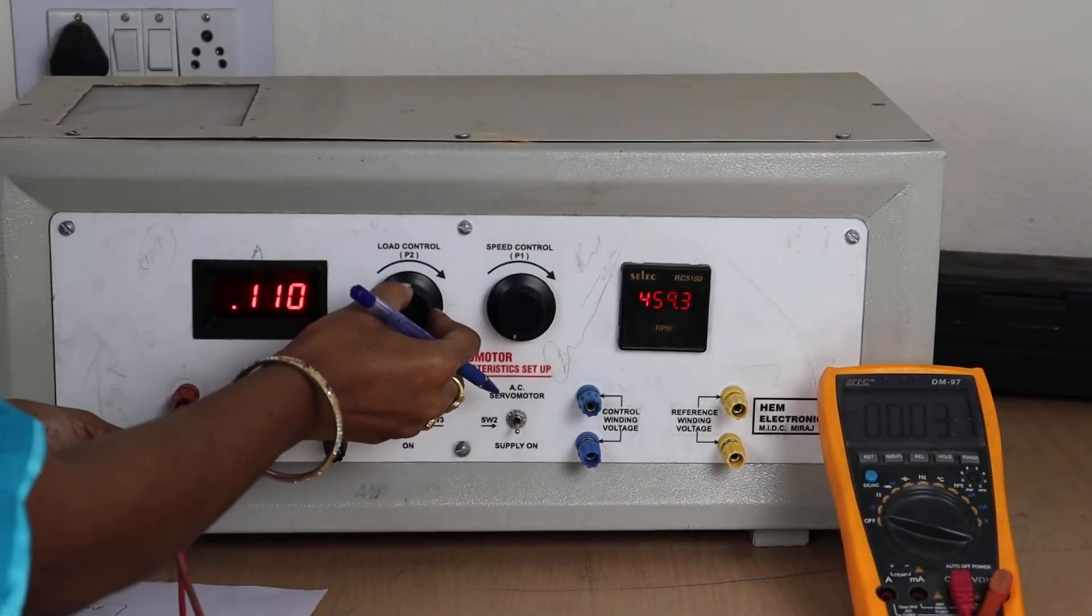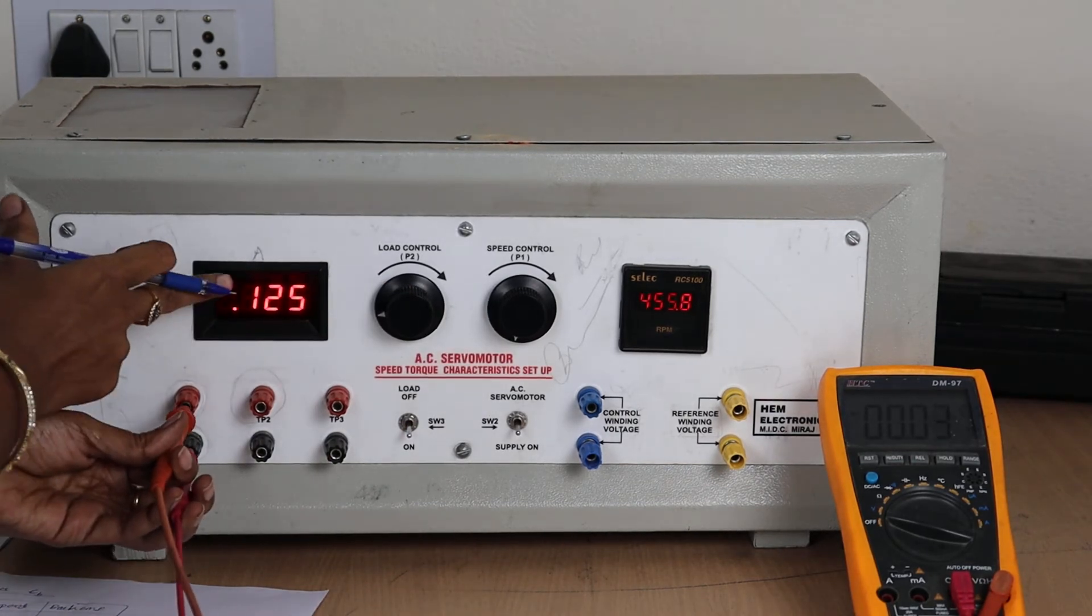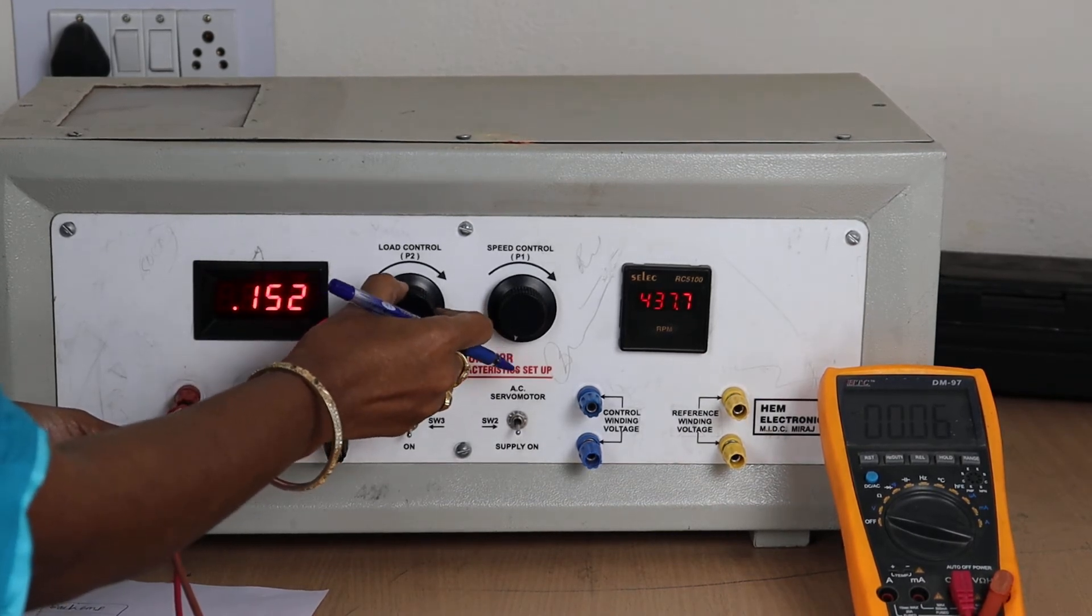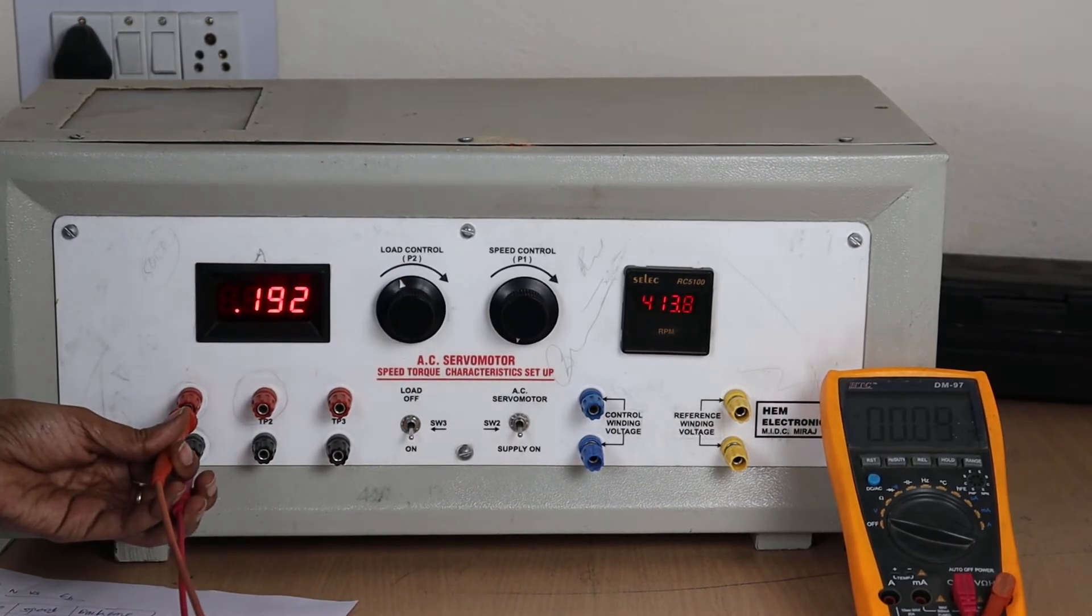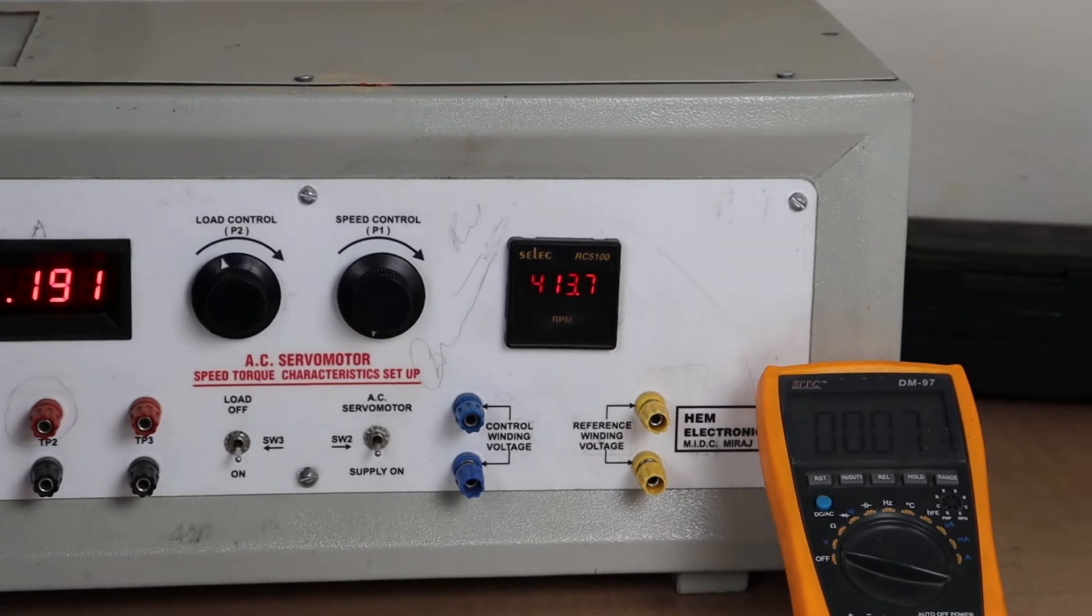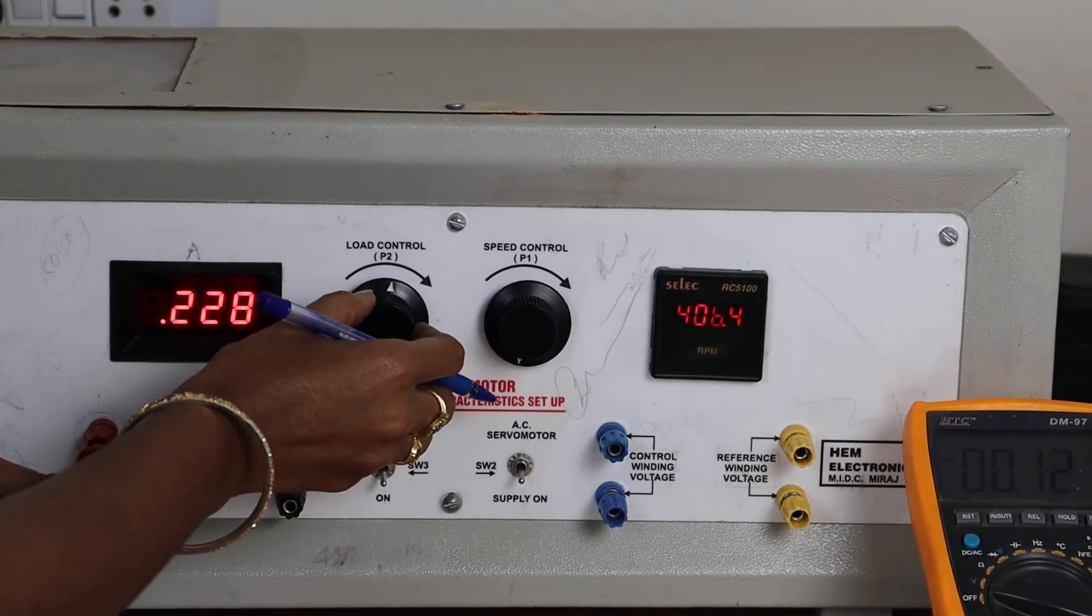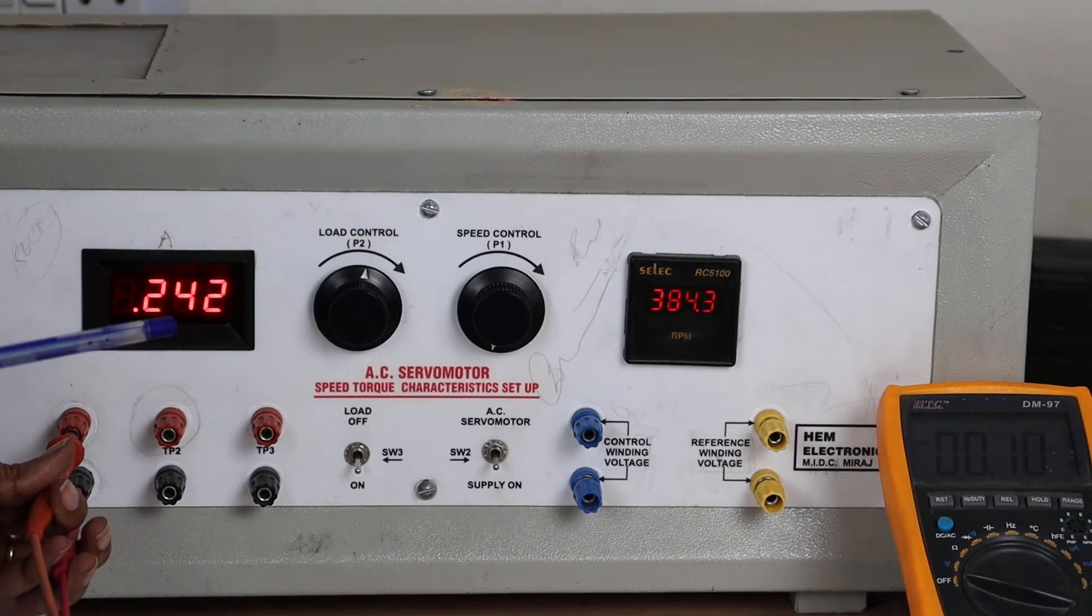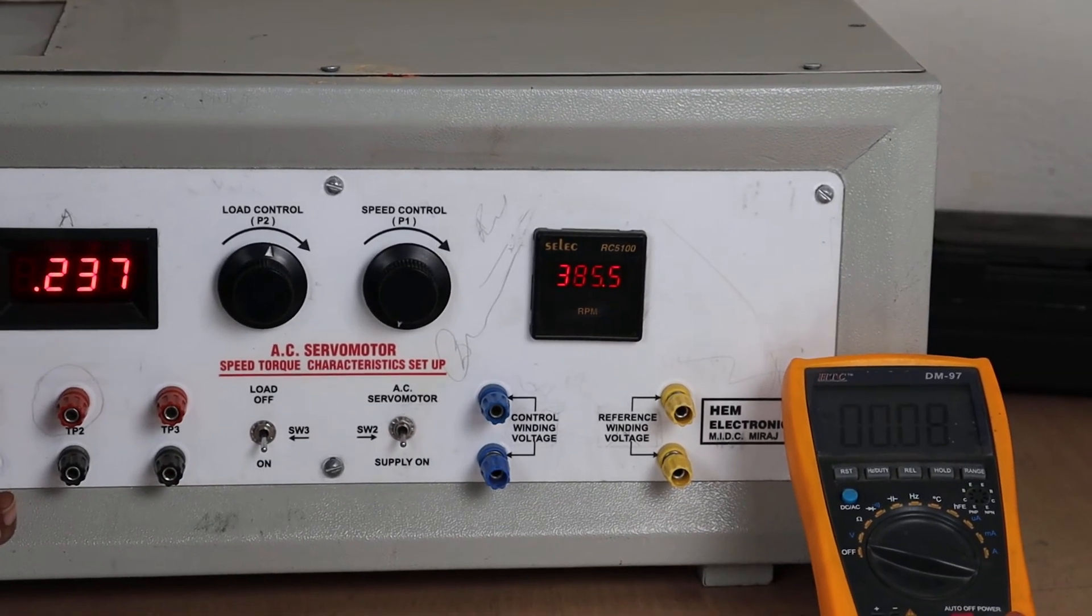Next apply some load by using this P2 knob. So whenever you are applying the load, automatically current will be increased and speed will get reduced. You can observe this in these two displays. 413 and current is 0.192. Back EMF is 0.08. Again I am applying some load. Speed is continuously getting reduced. 387 and current is 0.24 and voltage is 0.1.